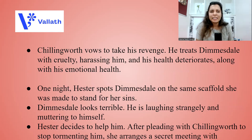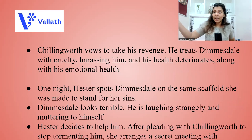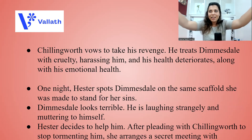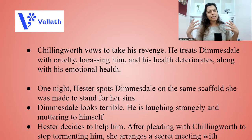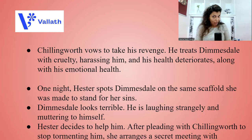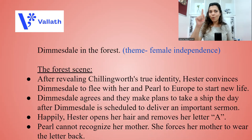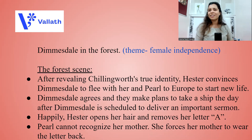Chillingworth vows to take his revenge. He treats Dimmesdale with cruelty, harassing him, causing his physical health to deteriorate further alongside his emotional health. One night, Hester spots Dimmesdale on the same scaffold she was once made to stand on for her sins. Dimmesdale looks terrible — laughing strangely, muttering to himself. Hester decides to help him. She goes and pleads with Chillingworth to stop tormenting Dimmesdale, and then arranges a secret meeting with Dimmesdale in the forest.